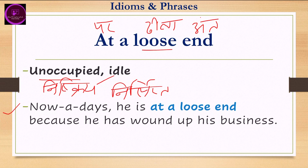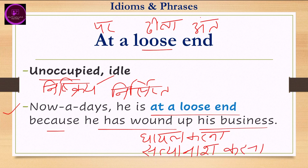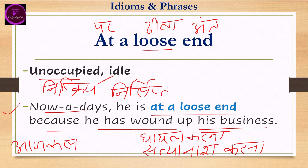Let's use it in a sentence: 'Nowadays he is at a loose end because he has wound up his business.' Wound up here means to destroy or close down a business — to suffer a loss. So nowadays he is sitting idle because he closed down his business. This kind of situation can be seen all over the world due to COVID-19.